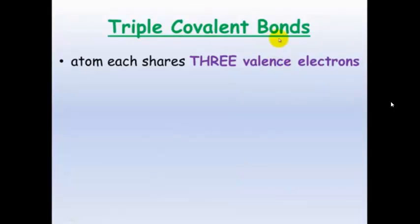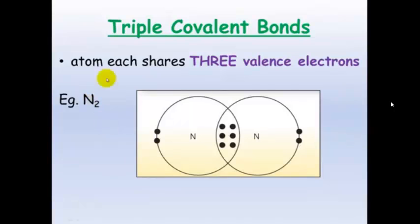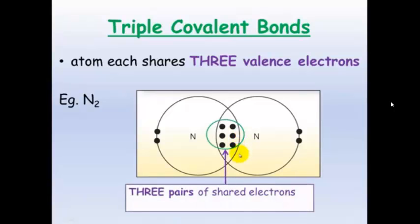In a triple covalent bond each atom shares three valence electrons. An example is nitrogen, which has five valence electrons, so it needs to share another three electrons with another atom — in this case itself. It shares three pairs of electrons, which forms a triple covalent bond.